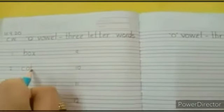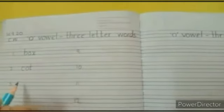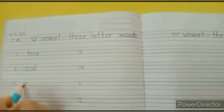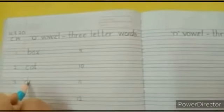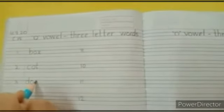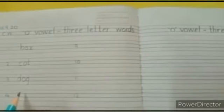Next word is dog. So below cot write dog. Next word is mom.